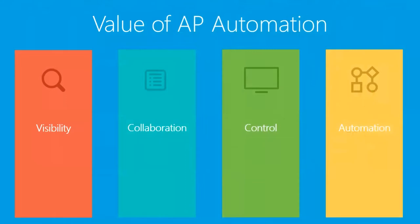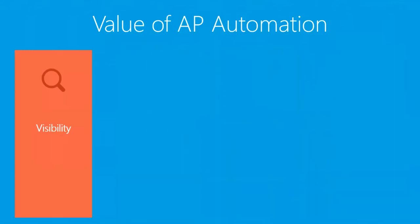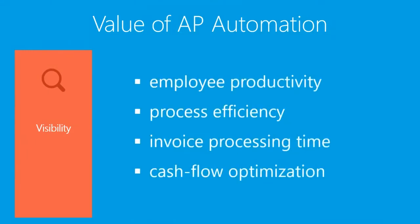When we talk about the value of automating AP, we're really talking about four different areas: visibility, collaboration, control, and automation. Starting with visibility, the value is more employee productivity, process efficiency, invoice processing time, and cash flow optimization. Allowing you to have that visibility gives you a lot of this value.